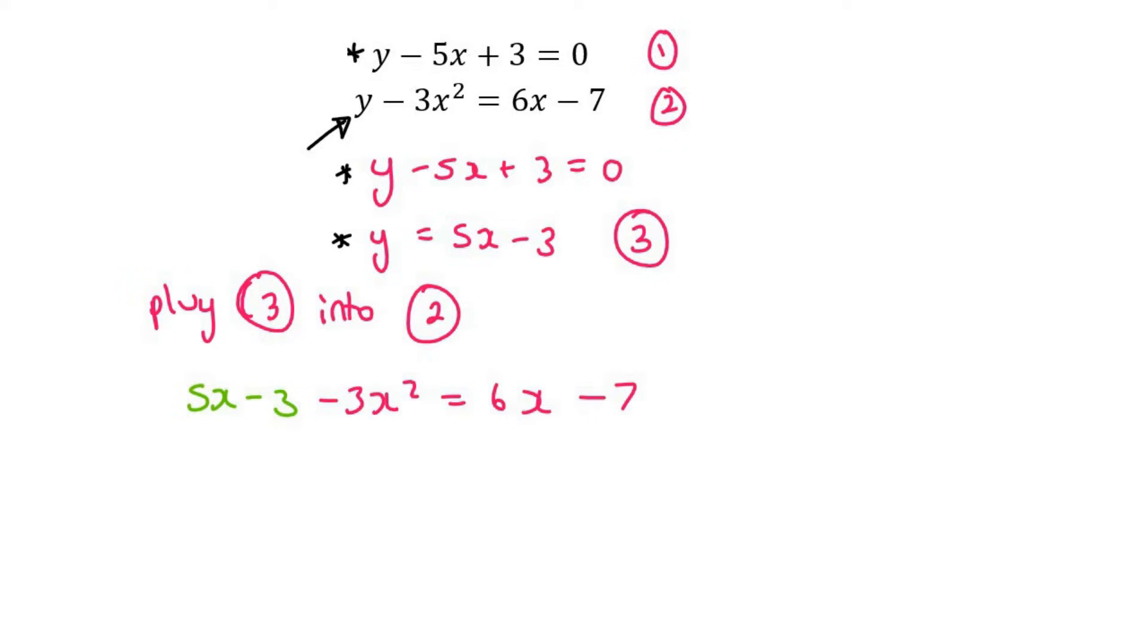Now we can go ahead and solve. So I'm going to take everything to the right, and so we're going to end up with 3x squared plus 6x minus 5x minus 7 plus 3, and so that's going to be 3x squared plus x minus 4. I'm going to use the quadratic formula now.